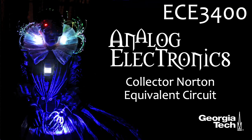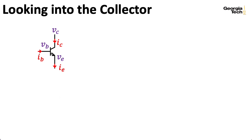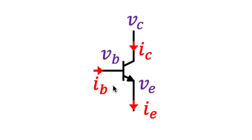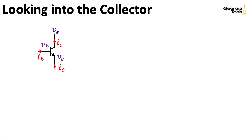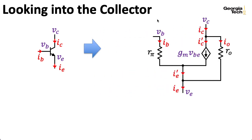In this lecture, we're going to formulate a Norton equivalent circuit for looking into the collector of a BJT. In the next two lectures, we'll do the same thing for the base and the emitter. When I draw a transistor symbol in this lecture, this isn't indicating the transistor in its full glory — it's indicating the small signal aspect of a transistor. All of the various voltages and currents we've drawn are using lowercase letters to represent small signal quantities.